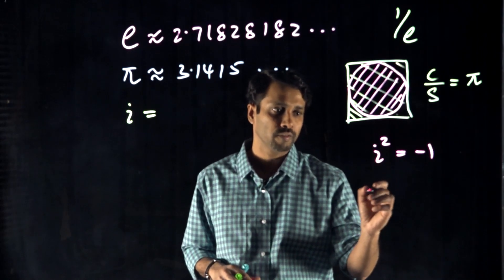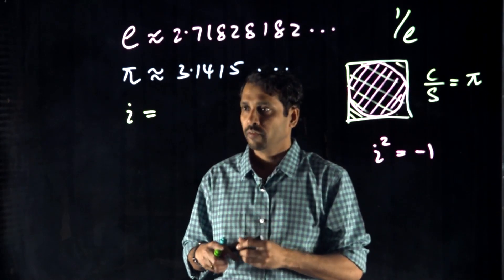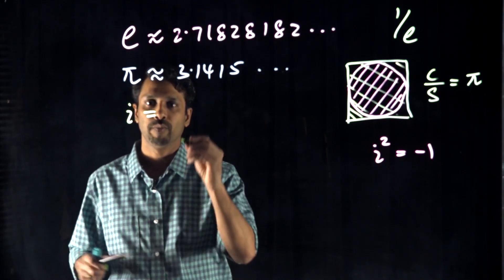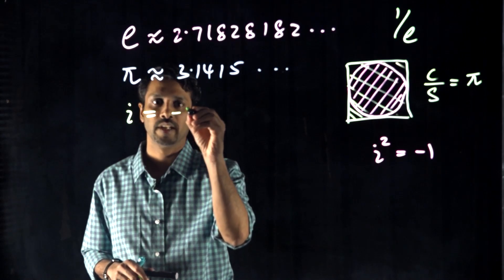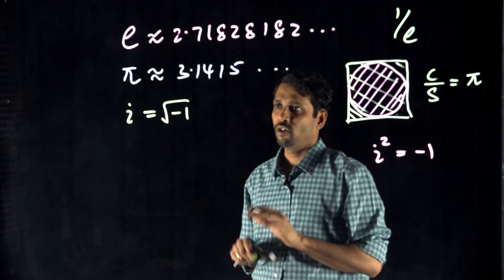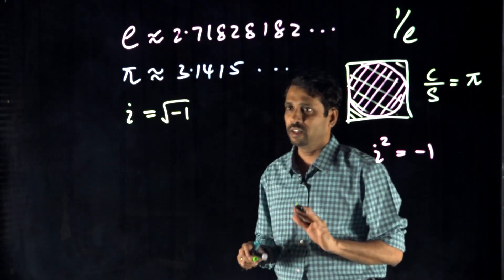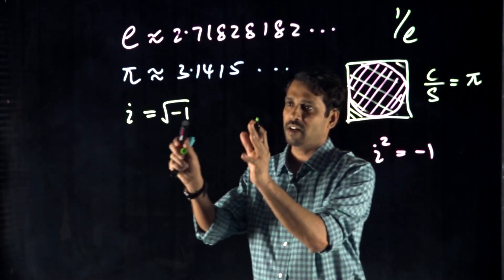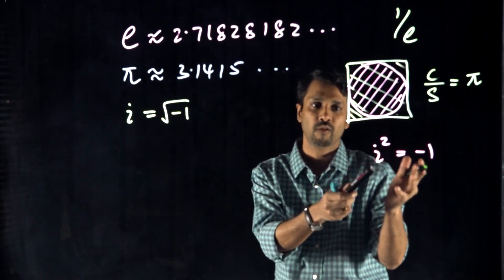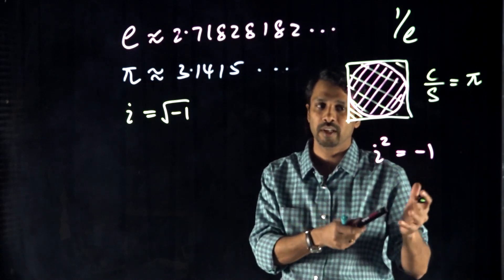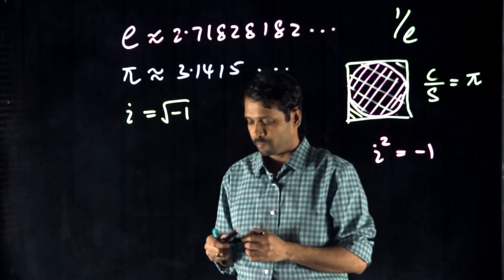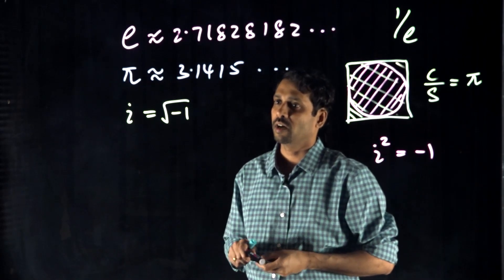Once you get the square root of negative 1, we get what we call the complex unit. But be careful — what you need to focus on is i squared equals negative 1. So that's the third important number.